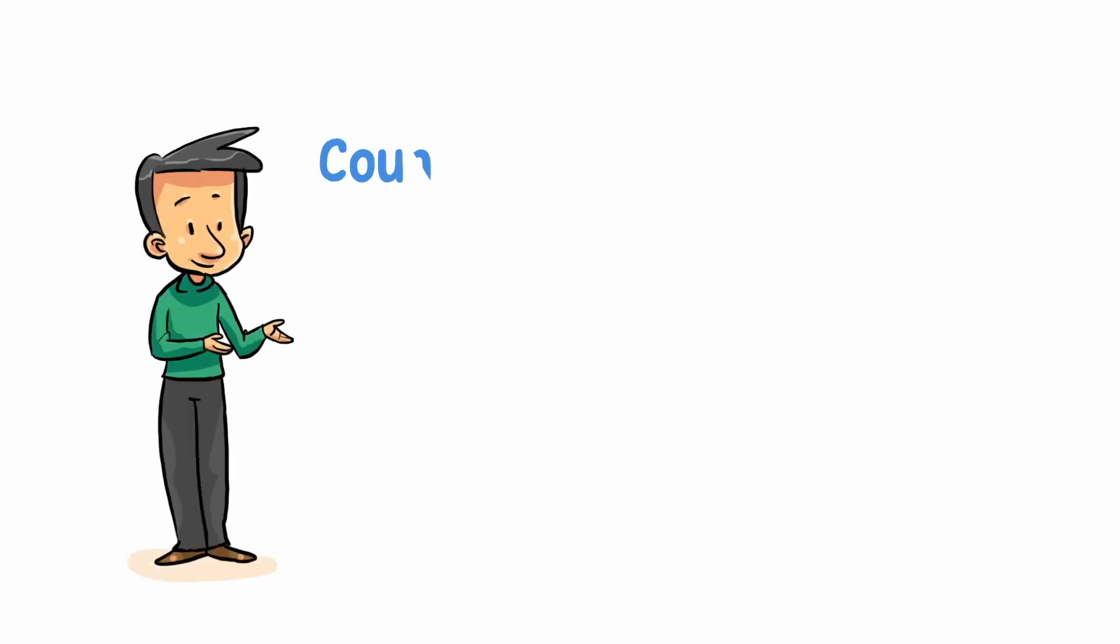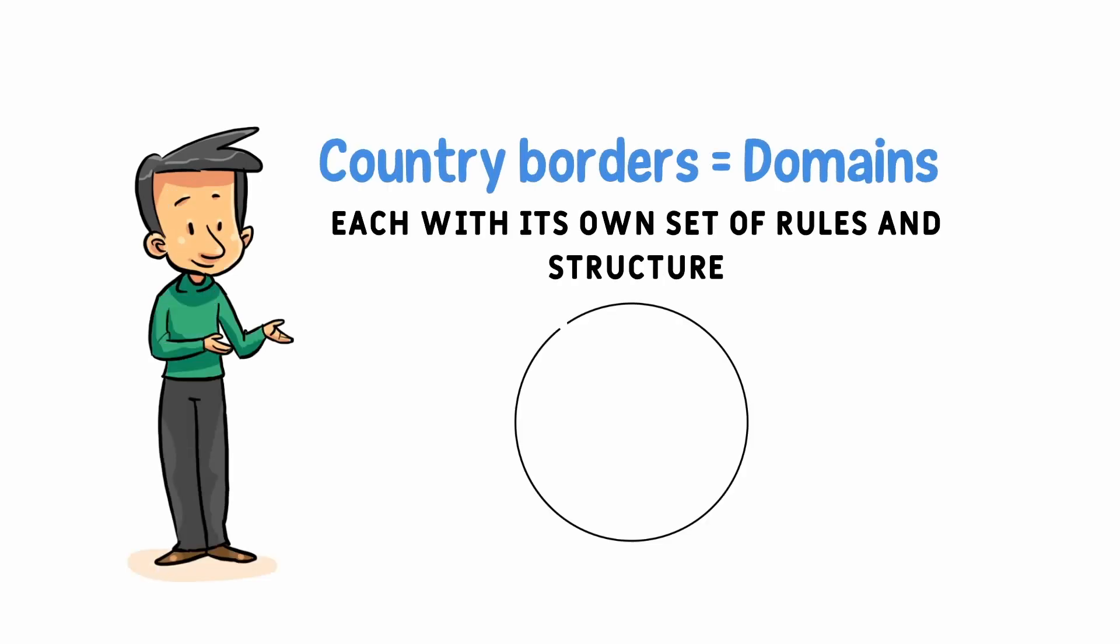Country borders can be compared to domains, each with its own set of rules and structure. The border is made of a facade that allows communication between the two countries.